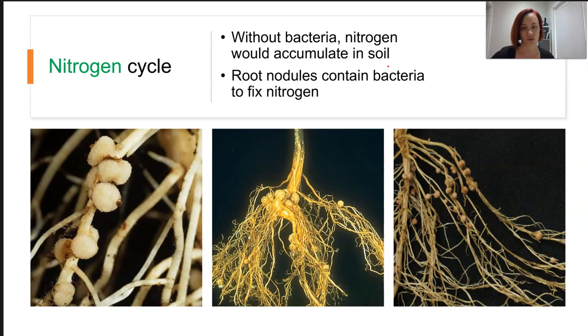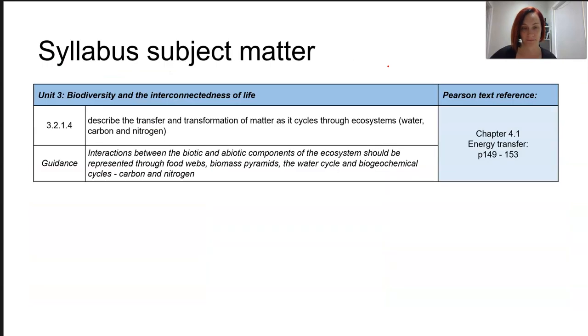So nitrifying bacteria in root nodules are 10 times more productive at fixing atmospheric nitrogen than free soil nitrifying bacteria. So it's actually a very good adaptation. The nitrogen cycle is really complex. It's going to take a few goes for you to understand it, so please don't expect that you'll get it just by staring at the picture. So our subject matter is all about the cycling of nutrients. We're talking specifically water, carbon, and nitrogen.